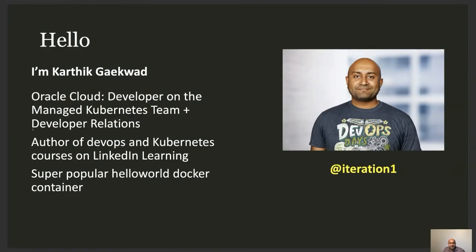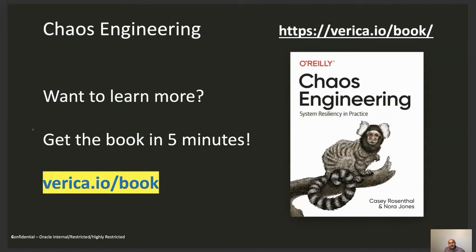I was on the managed Kubernetes team for Oracle, then developer relations for Oracle Cloud. I've done a ton of stuff with DevOps and Kubernetes. I have a course on Kubernetes and cloud native on LinkedIn Learning, and all of this got started because I had a very popular Hello World Docker container on Docker Hub. If you want to learn more about chaos engineering, there's the O'Reilly book of chaos engineering by Casey and Nora — you can get the PDF free at verica.io/book.